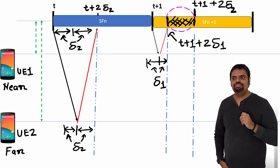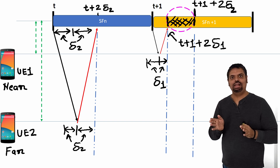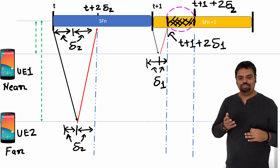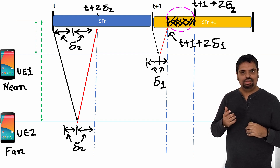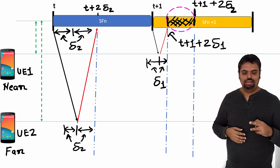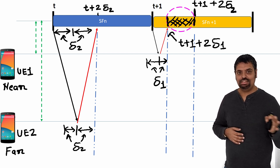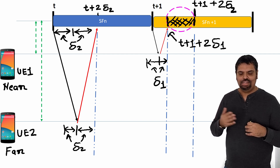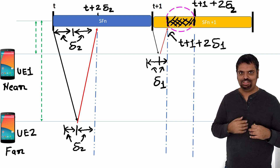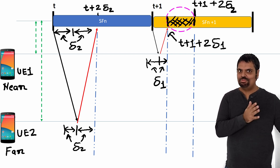Timing advance is basically a negative offset at the UE side, applied between the start of the received downlink subframe and the transmission of the uplink subframe. With UE2, transmission starts only after the downlink subframe arrives. Since UE2 is far, there will be a lag equal to propagation delay 2. So UE2 starts its uplink transmission at T plus propagation delay 2, and it reaches the eNB at T plus 2 times propagation delay 2. The eNB was expecting reception at time T, so the end time T+1 also gets shifted by 2 times propagation delay 2.